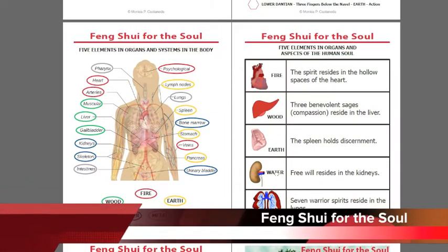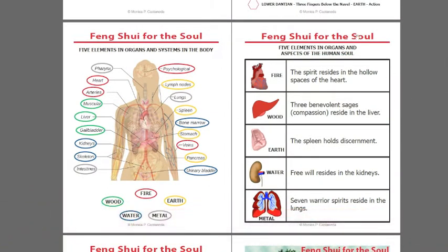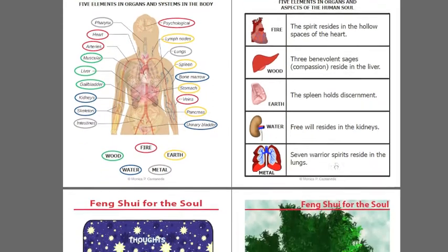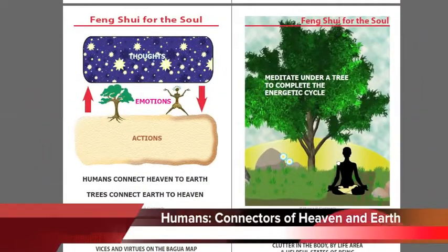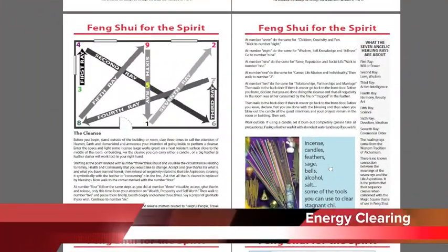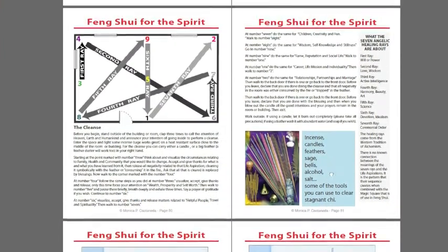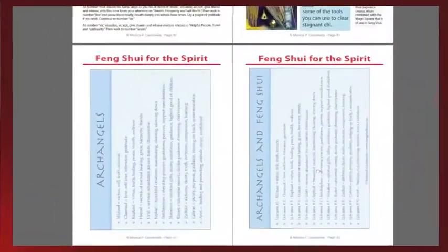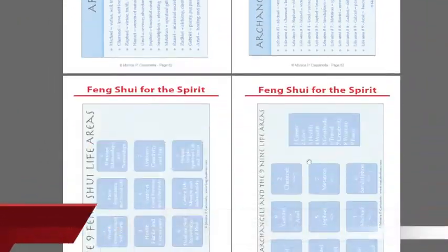Feng Shui for the soul is one of my favorite parts. There is an anatomy of the soul that we study in any branch of Chinese medicine, including Feng Shui — for example, the spirit resides in the hollow spaces of the heart, and there are three benevolent sages that reside in the liver. Humans as connectors of heaven and earth, vices and virtues on the Bagua Map, and clutter in the body related to the Bagua Map. This book also has information that teaches you how to clear your own space of negative subtle energies. Feng Shui for the spirit covers the relationship between the archangels and the life areas in Feng Shui.